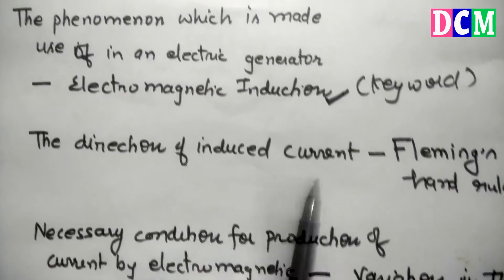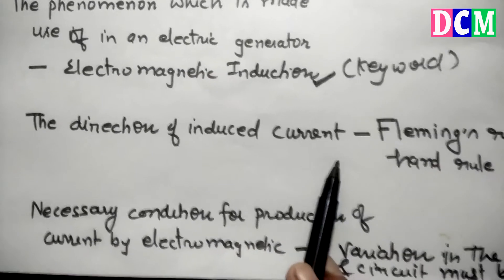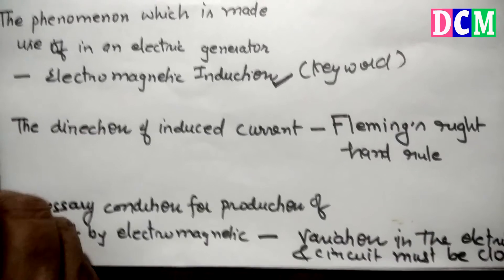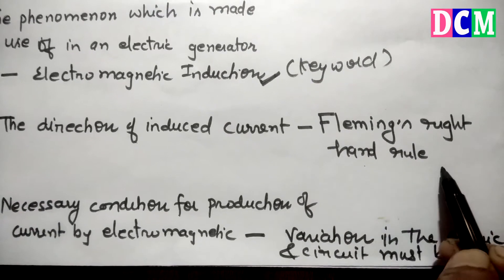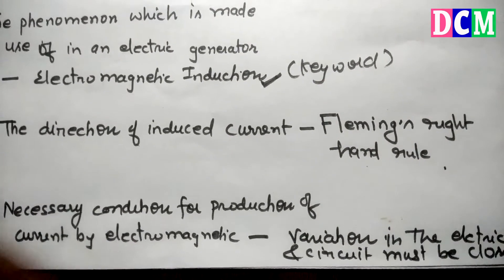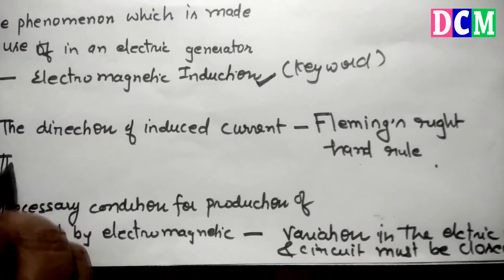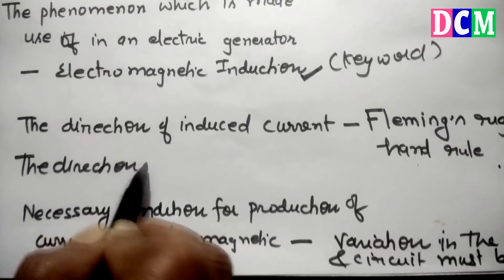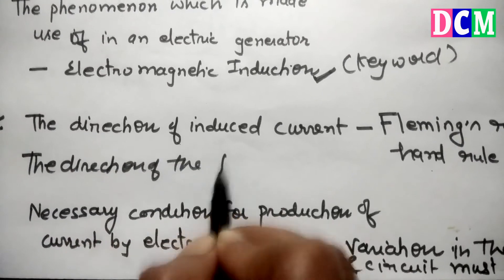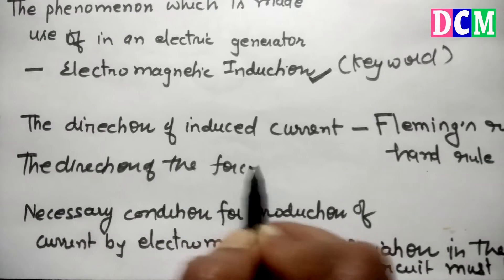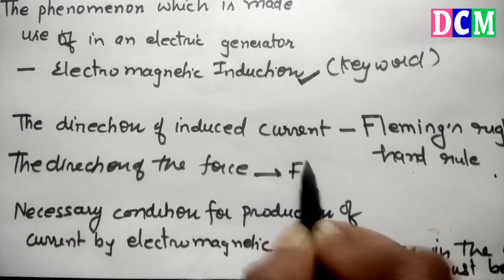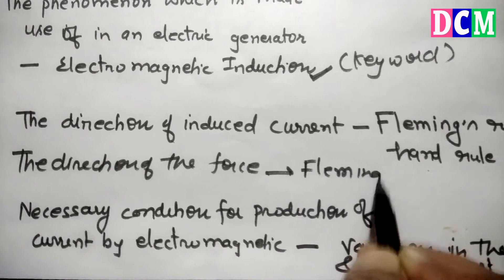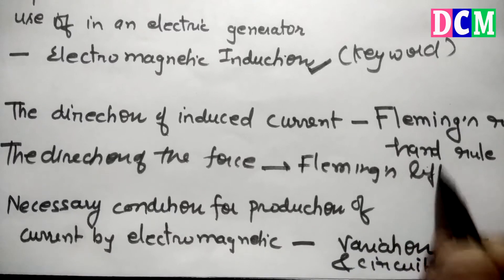To find the direction of induced current, you use Fleming's right-hand rule. To find the direction of force, you use Fleming's left-hand rule.